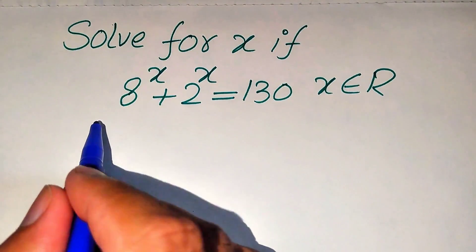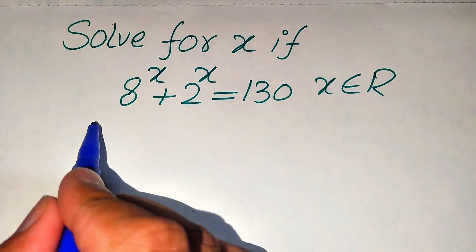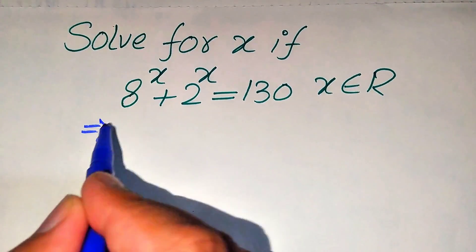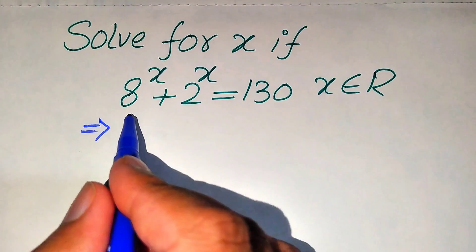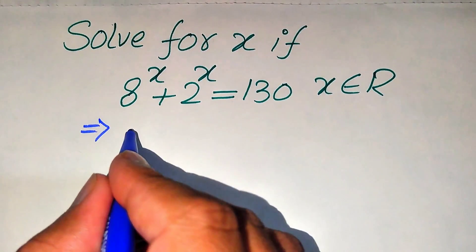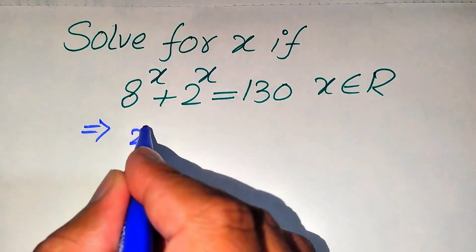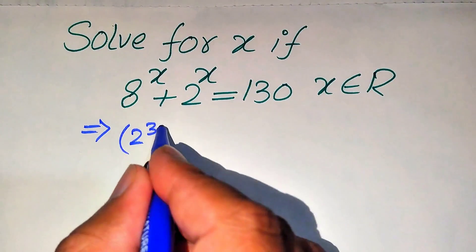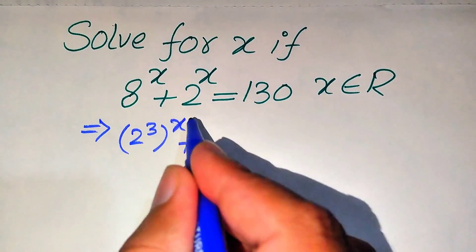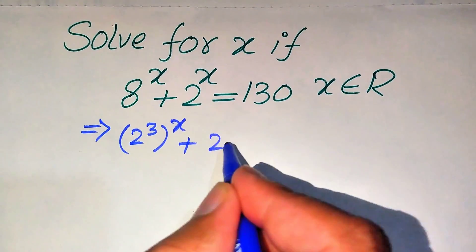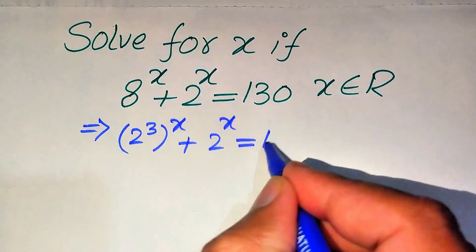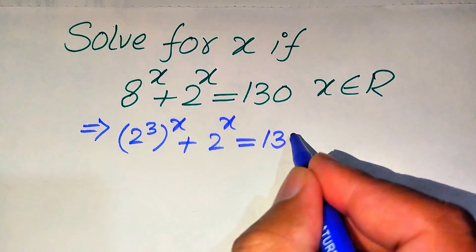The very first step is to rewrite this equation. We write 8 in its prime factors form — the prime factors of 8 are 2 cubed — so the equation becomes (2³)^x plus 2 to the power of x equals 130.